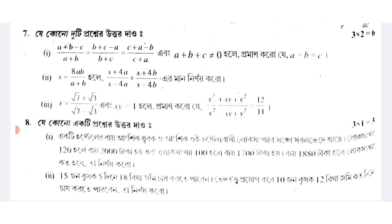(a + b)/(a + b) × x + 4a/(x - 4a) + (x + 4b)/(x - 4b) = x, which equals (√7 + √3)/(√7 - 3). If xy - 1, find (x² + xy + y²)/(x² - xy + y²). 12y, question 11.